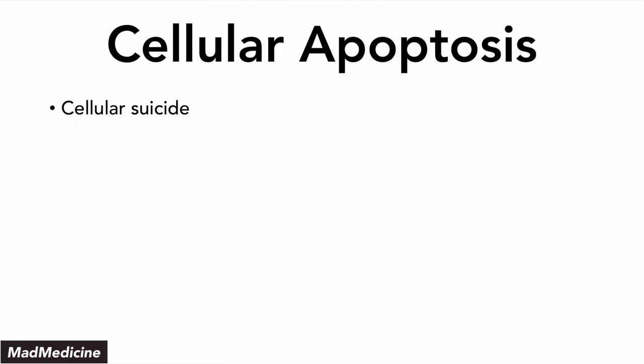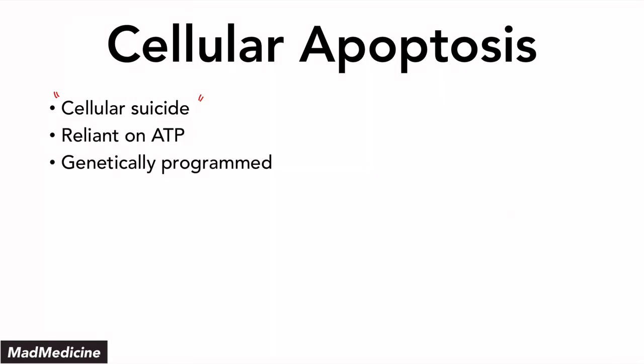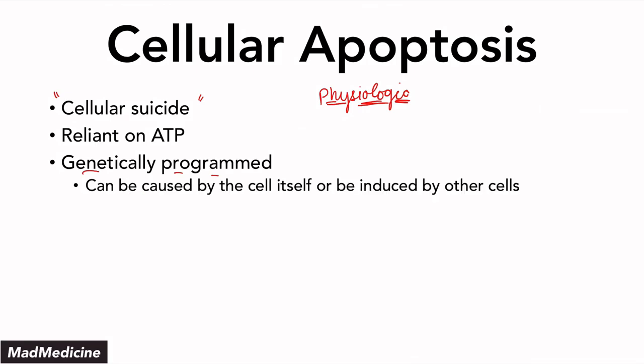Apoptosis is also known as cellular suicide — that is something commonly referred to. One thing to remember about apoptosis is that it requires ATP because it is genetically programmed. This is actually a physiologic response that can happen in our body. It can be normal for a cell to die off. It can be caused by abnormal instances or pathologic states, but the actual mechanism of dying is physiologic.